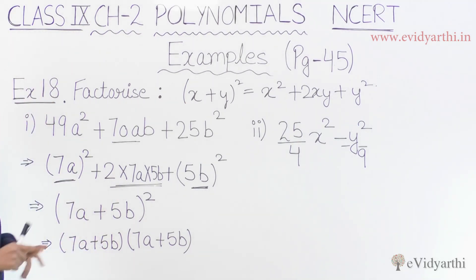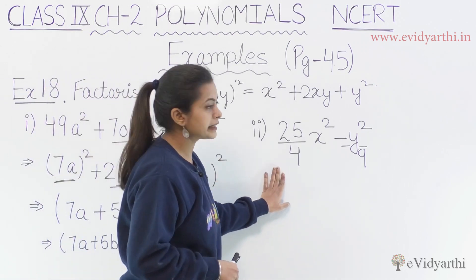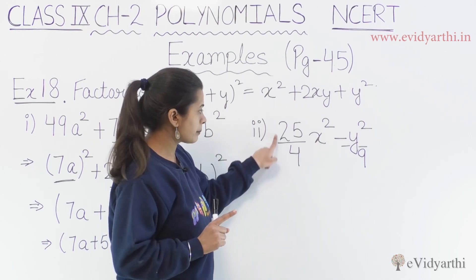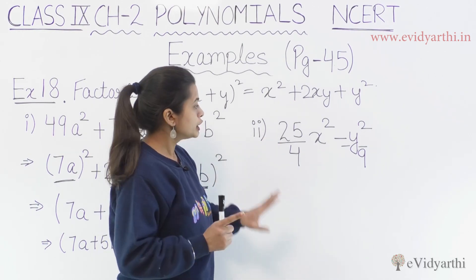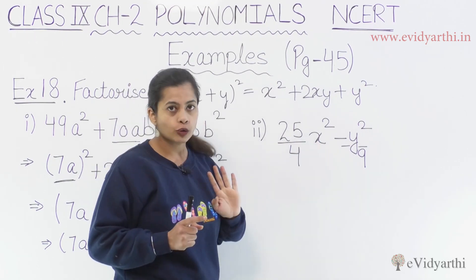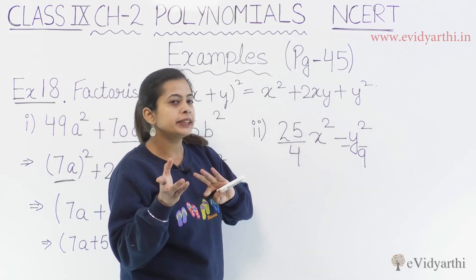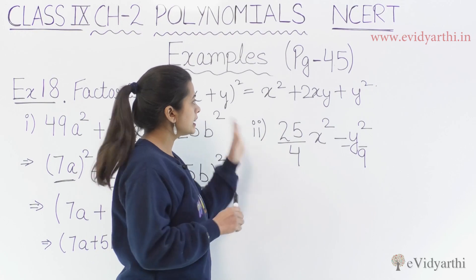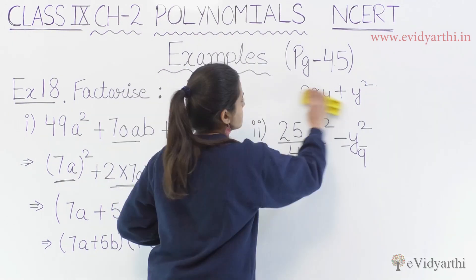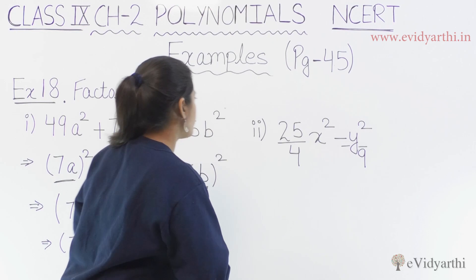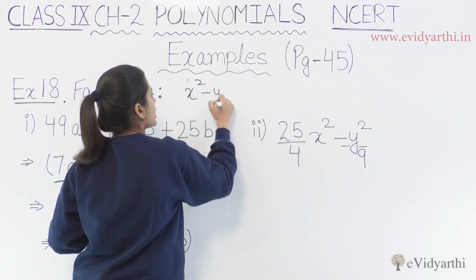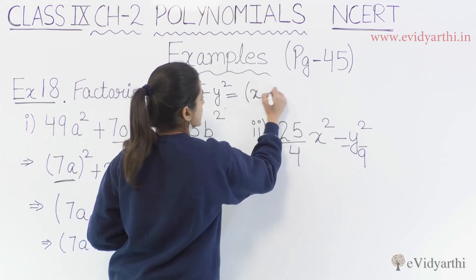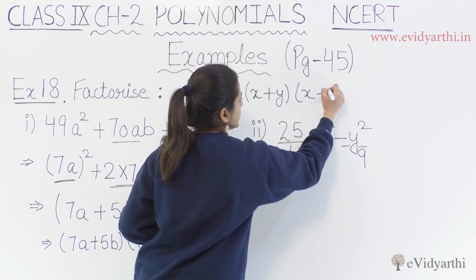Now we are moving towards the second part. Here you should clearly identify the identity. If you can't decode it yet, think about x² and y², i.e., a² minus b² or x² minus y² identity. Let's expand this one. If we use the x² minus y² identity, how do we expand it? It becomes x plus y, times x minus y.